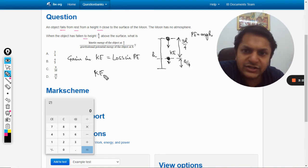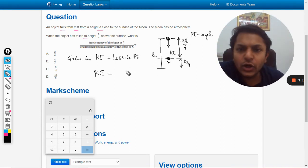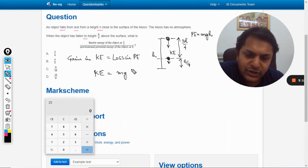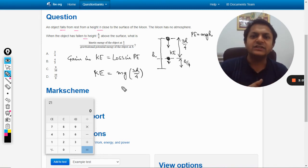Gain in kinetic energy is loss in potential energy. It has fallen by the height of 3h by 4, so the loss in potential energy will be m into g into the height by which it has fallen. So this is the lost energy, which will be converted into kinetic energy. This much is the kinetic energy now.